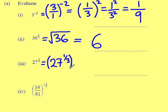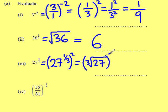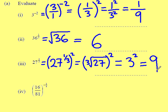If a half means square root, then a third will be the cube root of 27, and then square it. The cube root of 27 is 3, and when I square that number, my final answer will be 9.